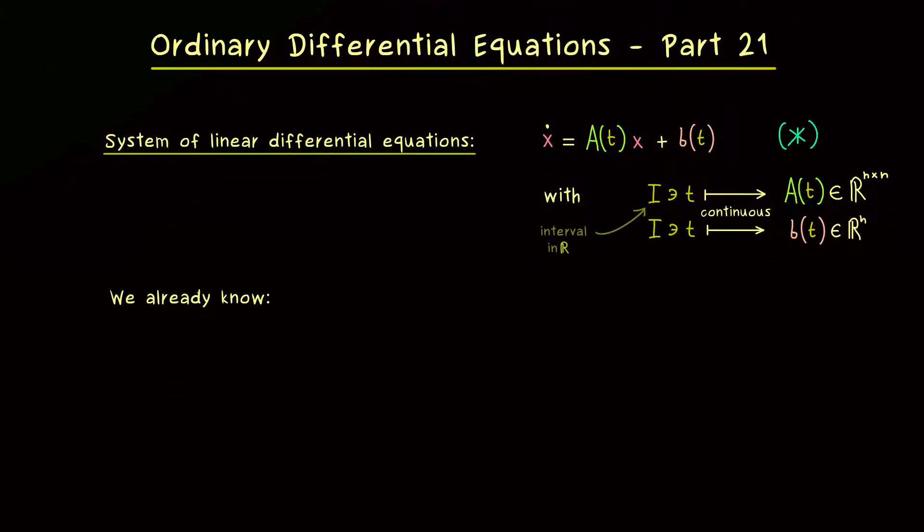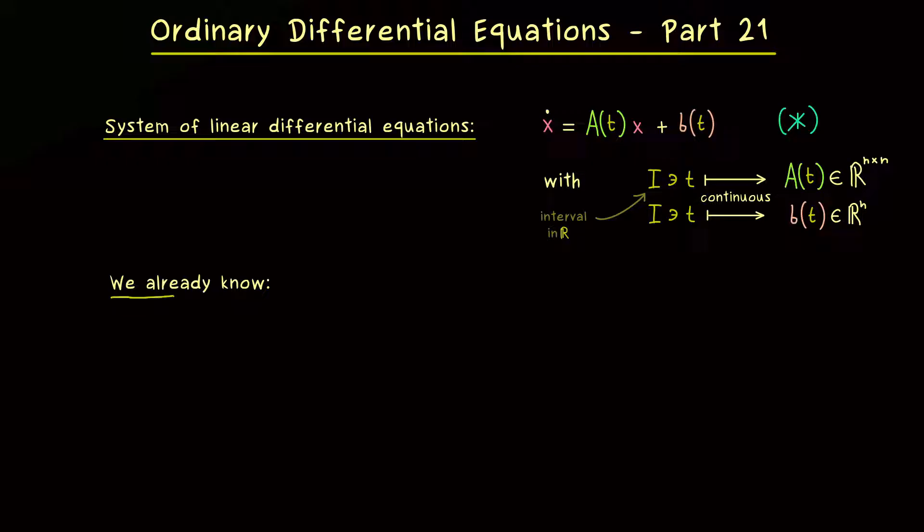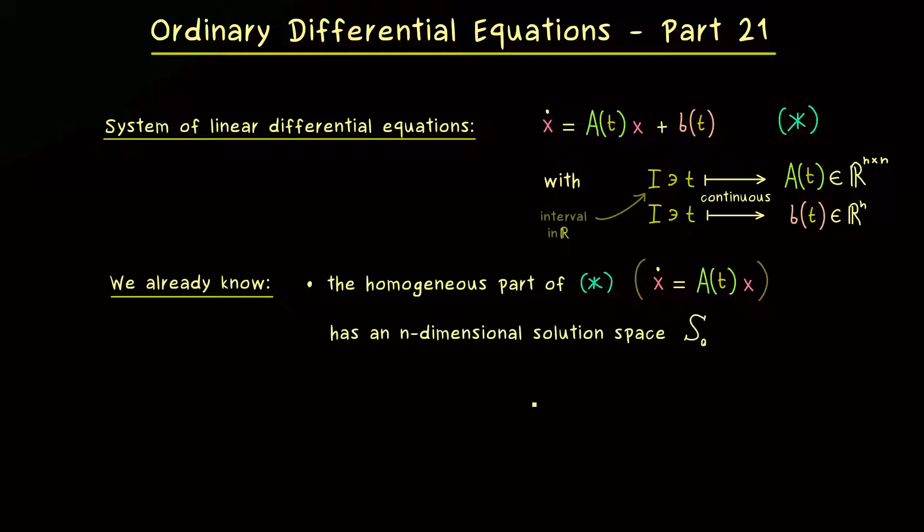And since we have already discussed a lot about this system star, we can list the things we know. So for example star has a homogeneous part. This simply means that we can just consider the system where we ignore the part b(t), which means we only have the matrix vector multiplication on the right hand side. And now please recall from part 19 that the homogeneous system has an n-dimensional solution space we call S₀.